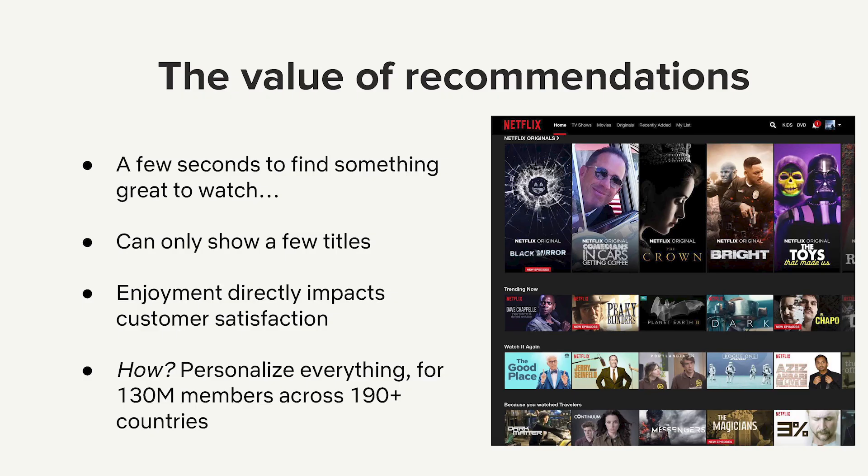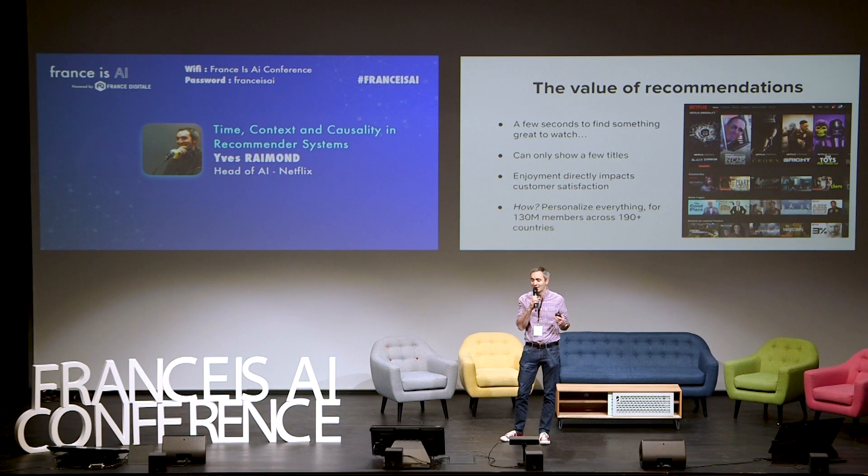Why do we care so much about recommendations at Netflix? It all comes down to a very simple problem: typically our members only have a few seconds to find something great to watch. In a few seconds you can only scan so many titles, so the job of our recommendation algorithms is to make these few seconds as productive as possible, maximizing the chance that you find something great to watch and enjoy. The quality of our recommendations has a direct impact on the satisfaction of our members, and has a direct impact on our baseline as well.